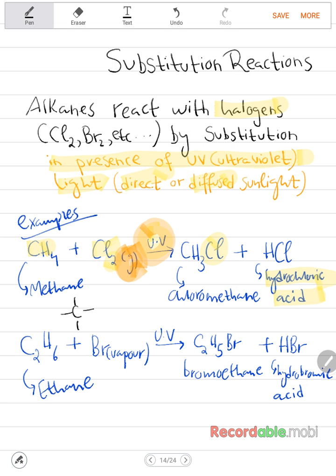Let me draw the structure quickly. The methane obviously has four hydrogen atoms bonded to it. What happens is one hydrogen atom is removed and replaced by chlorine, so it becomes chloromethane. And this hydrogen atom which left bonds with chlorine, the second chlorine atom, to give you hydrochloric acid.